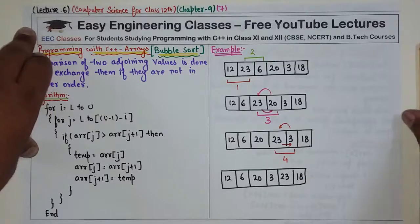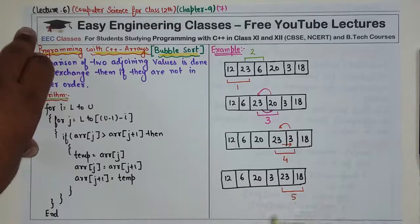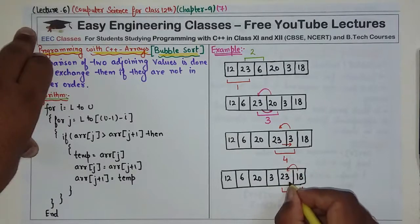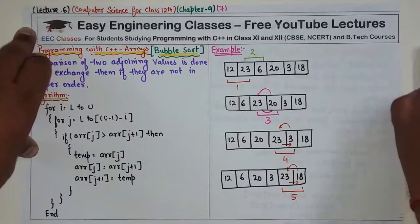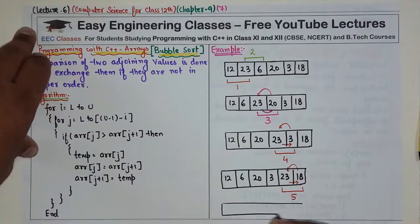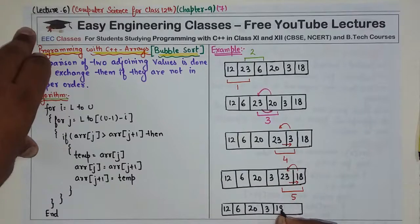The last comparison in this pass is the fifth comparison between 23 and 18. Since 18 is smaller, we interchange. So it will become: 12, 6, 20, 3, 18, and 23.